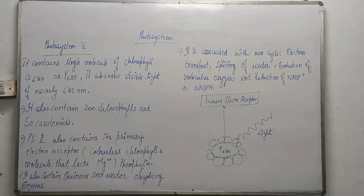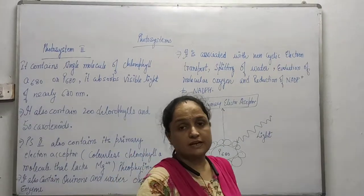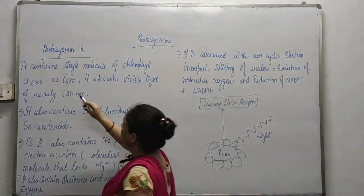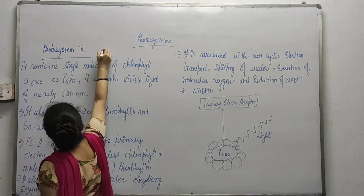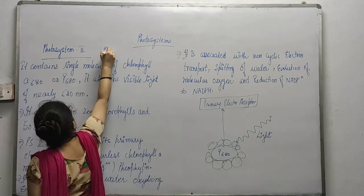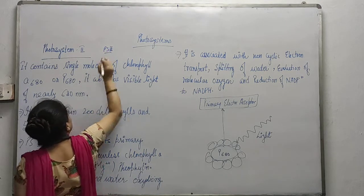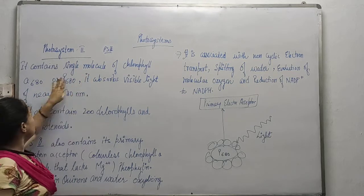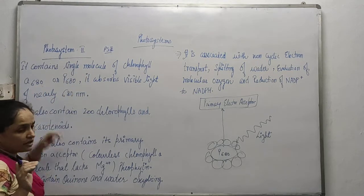Next in the series we are going to talk about is Photosystem 2, also written as PS2. It contains a single molecule of Chlorophyll A680.